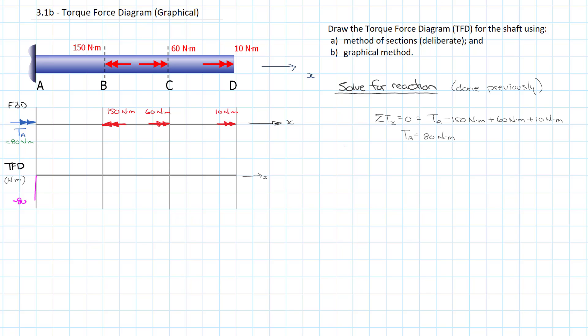There's no torques between A and B, so we draw a constant across. At point B, there's a 150 newton meter negative torque applied, going left or negative, and we're flipping our sign. That's going to push our torque force diagram up 150, so we take the negative 80, add 150 to it, and it brings us up to a value of positive 70.